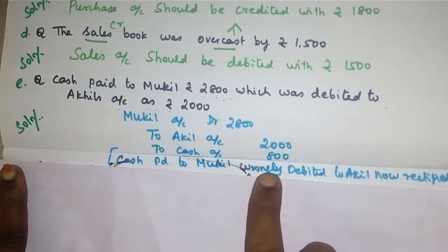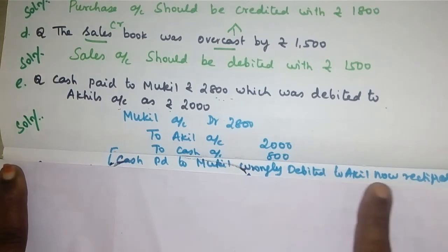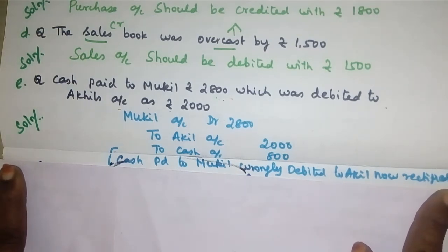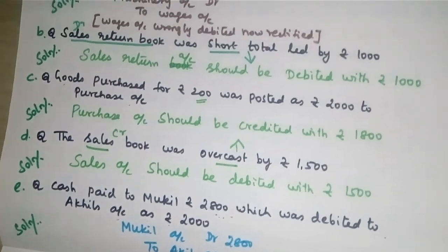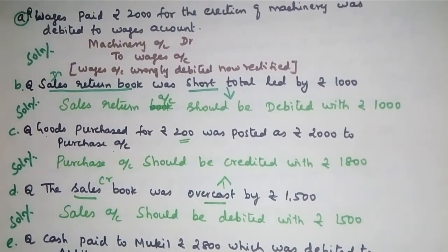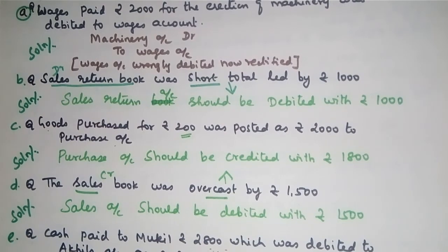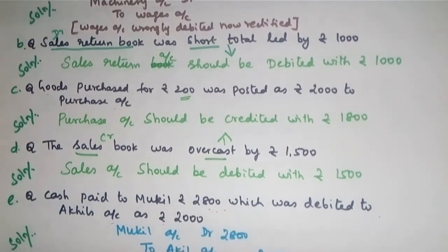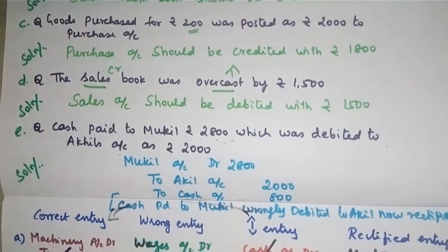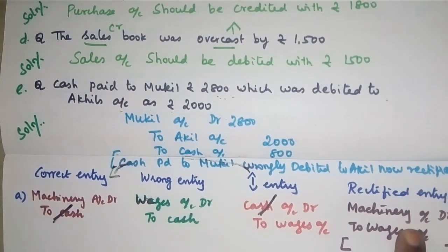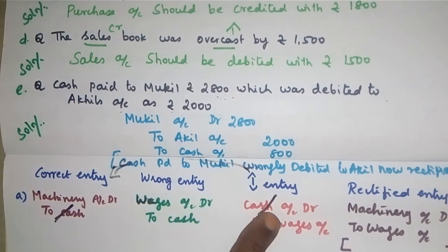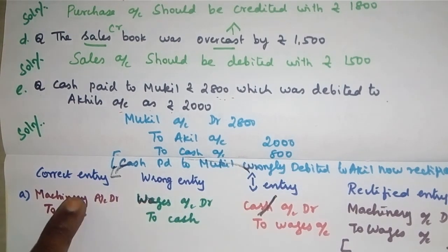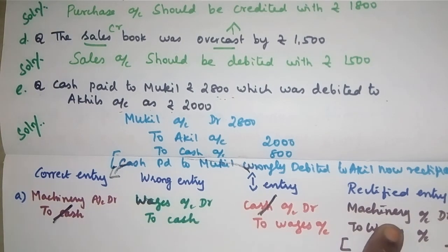The solution for transaction E: Mukil account debit 2800, to Akil account 2000, to cash account 800. Cash paid to Mukil was wrongly debited to Akil - now rectified. This will be the solution for exercise sum number 6. The method is: find the correct entry, identify the wrong entry, pass the reverse entry, and the reverse entry combined with the correct entry gives you the rectified entry.